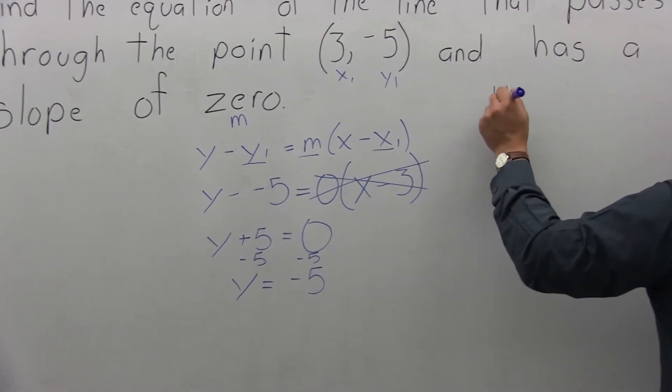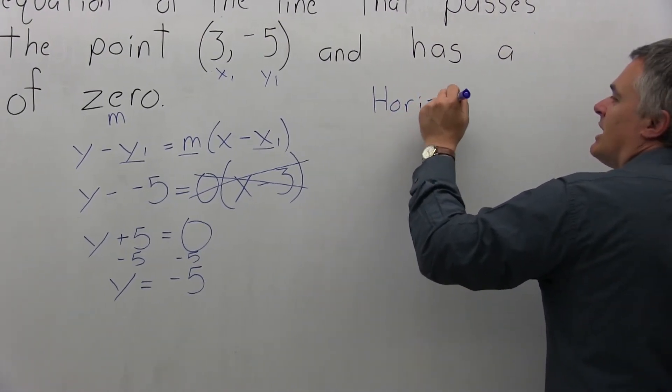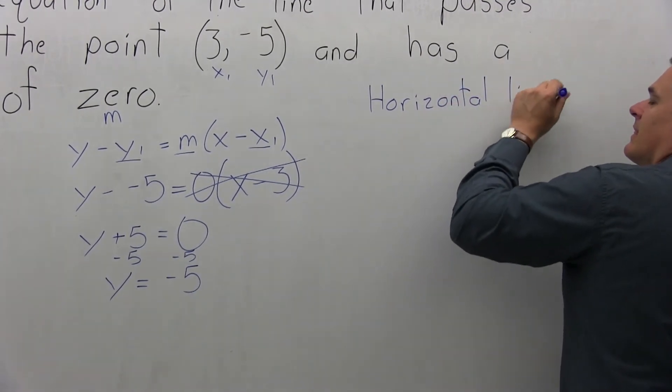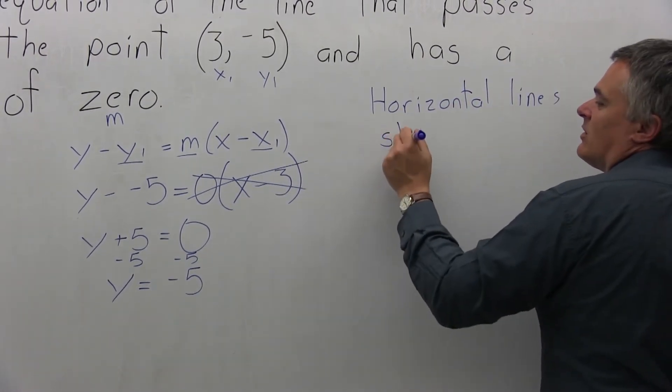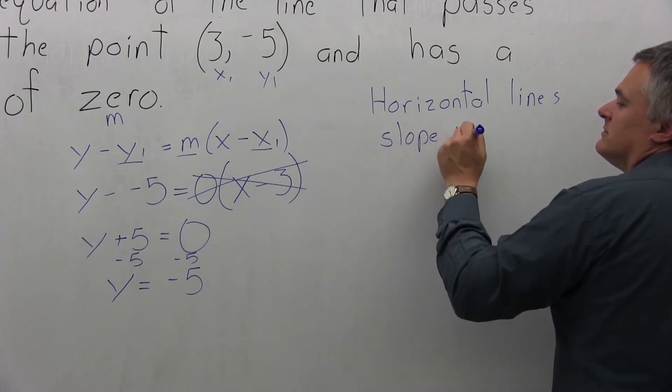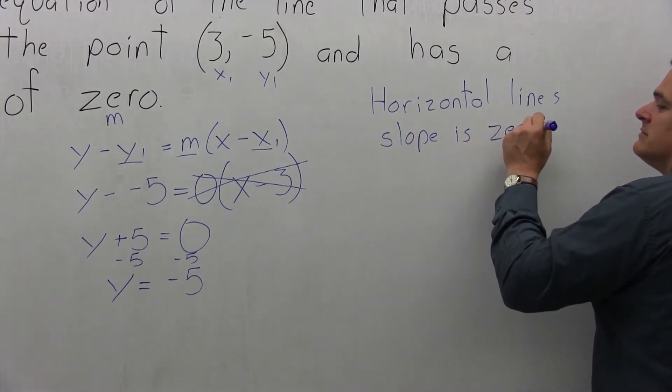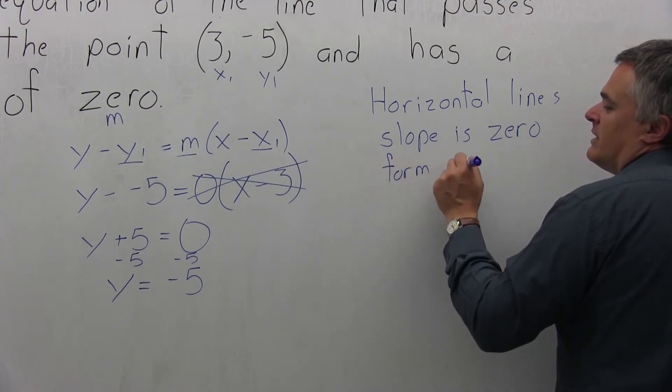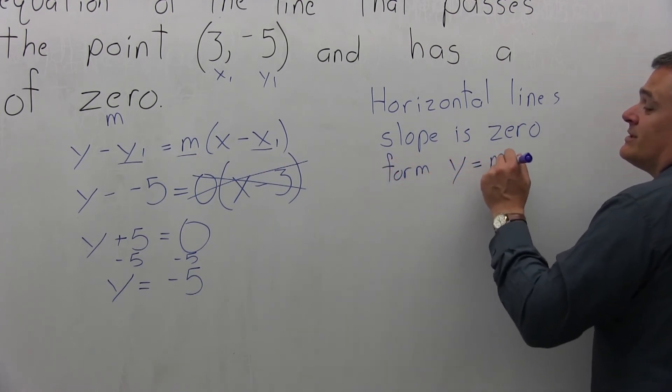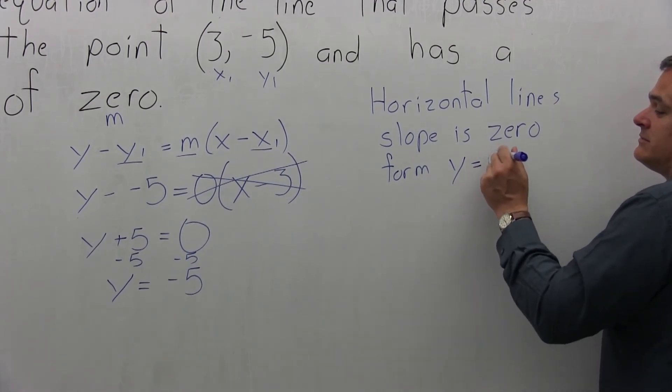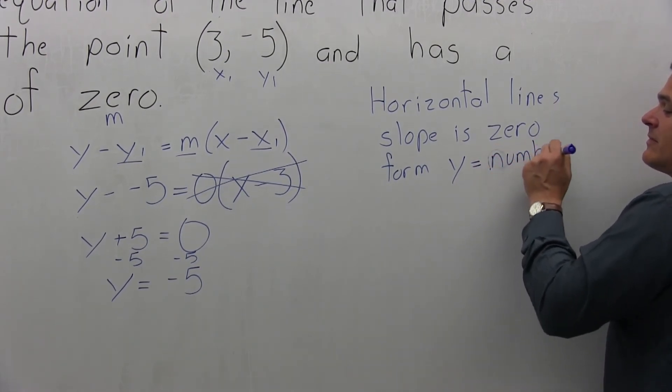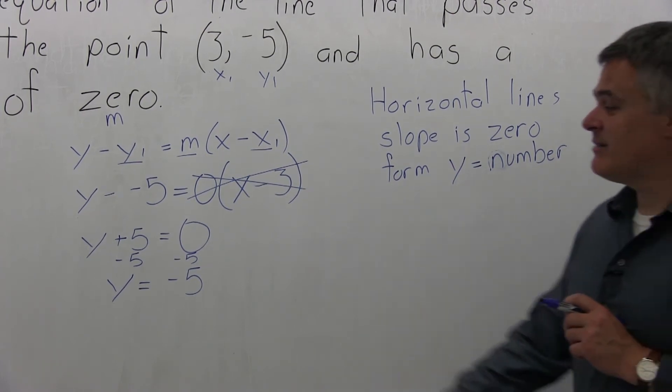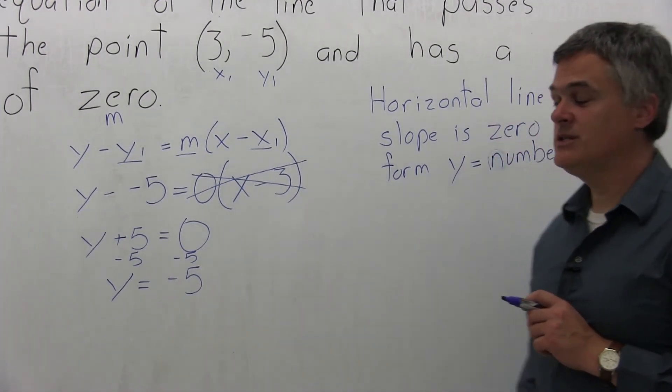The other option is, if you happen to remember that all horizontal lines have a slope of 0, form is y equals a number. If you happen to remember that, you'll get the same answer that we got this way, but a little bit easier.